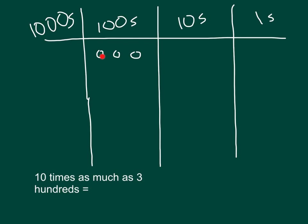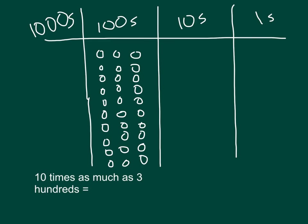Each of these disks is now 10 disks instead. 3, 4, 5, 6, 7, 8, 9, and 10. Multiply by 10. Yep. That 100 now becomes 10 hundreds. And same thing with that 100. It now is 10 hundreds because we multiplied by 10. 10 times as much.